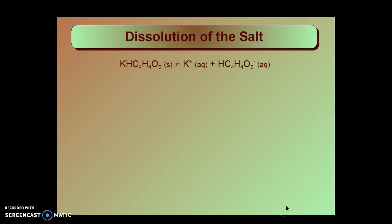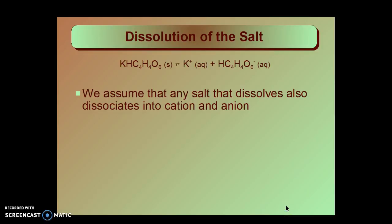The salt dissolves and we assume that any salt that does dissolve also dissociates into cations and anions. We'll call this KHT. KHT is one of the few potassium salts that is not very soluble in water. But what does dissolve will dissociate.